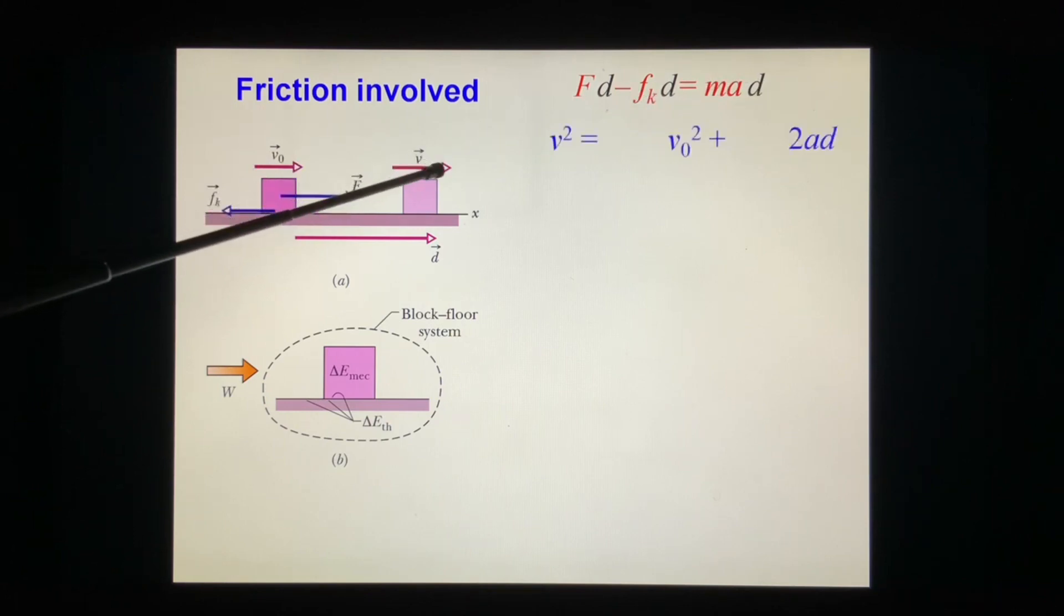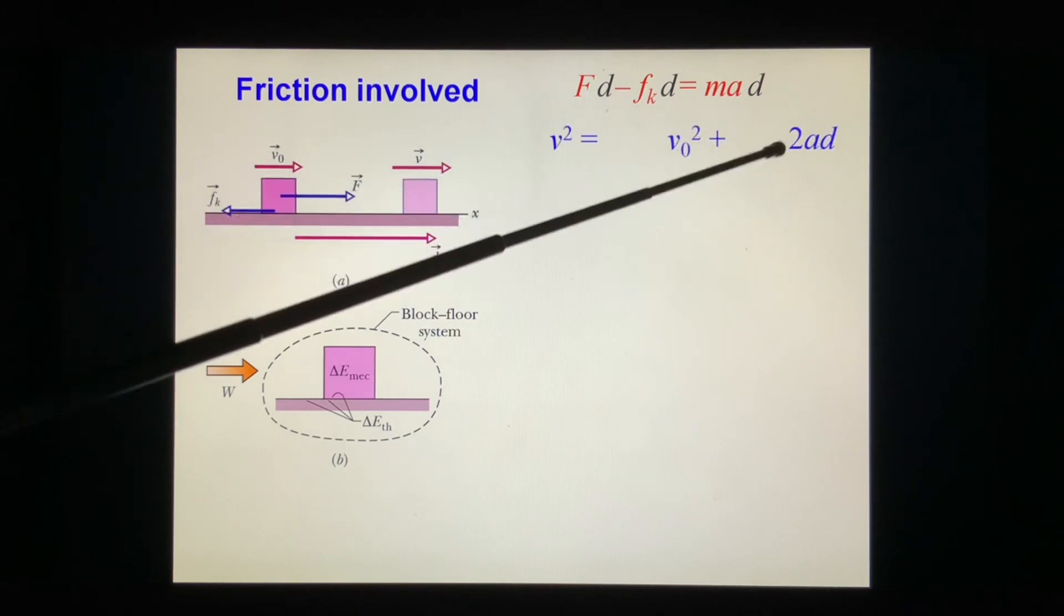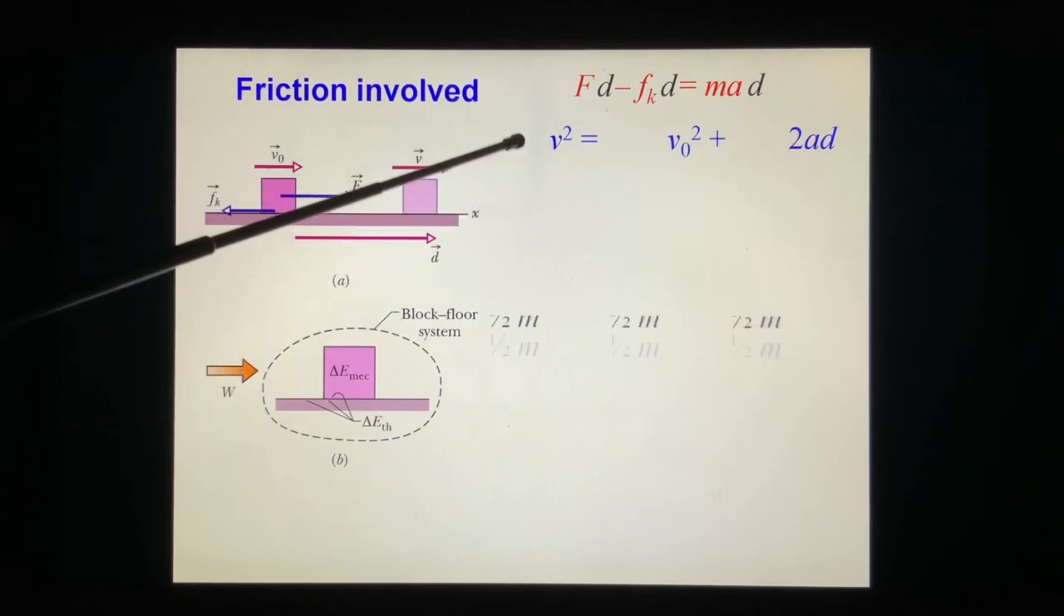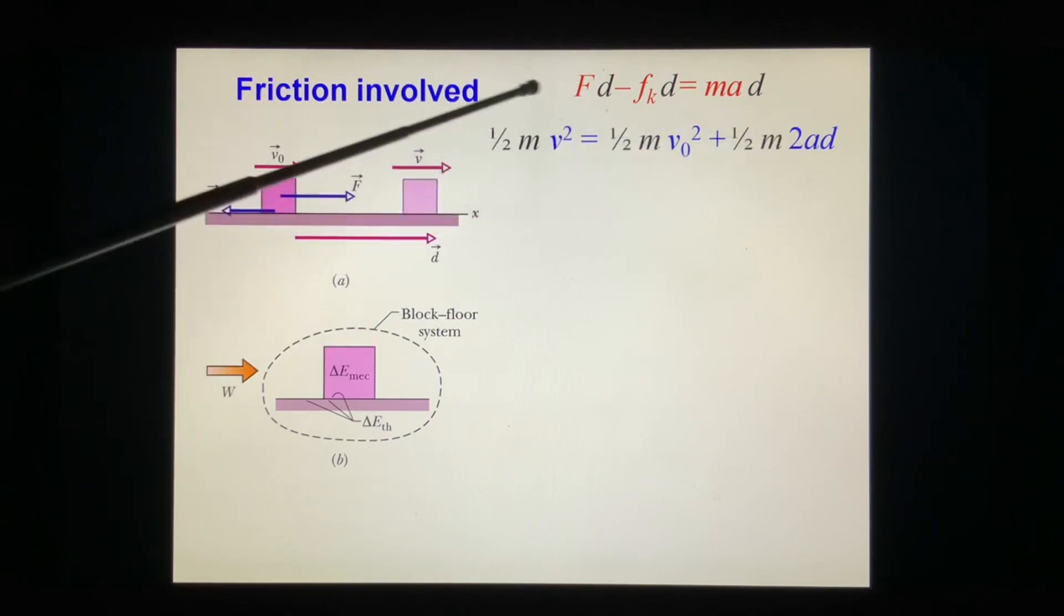We have v² = v₀² + 2ad. We multiply half m on both sides. We get this is the final state kinetic energy.